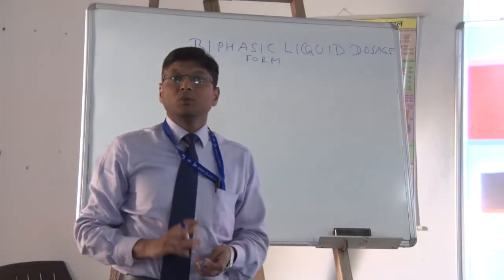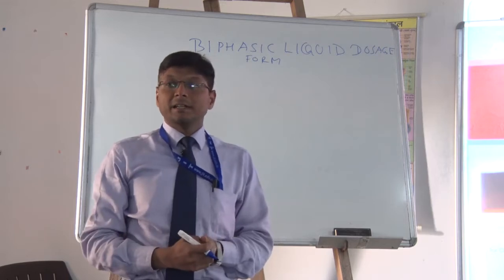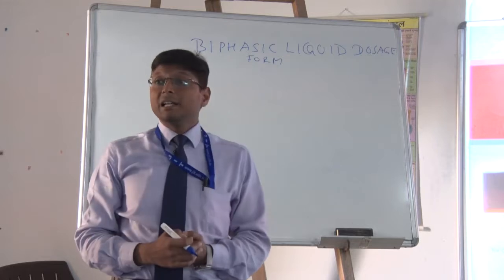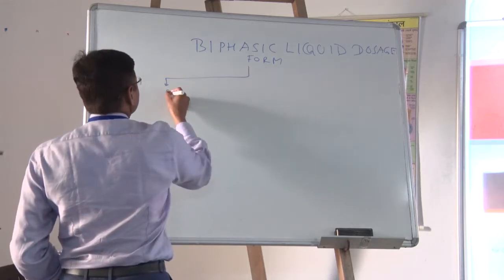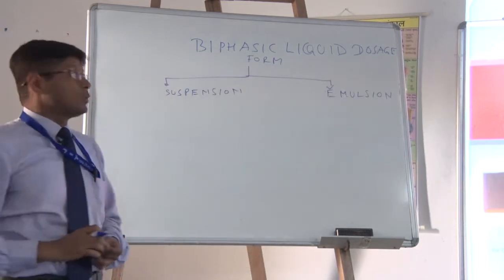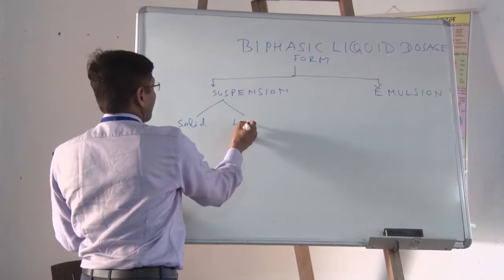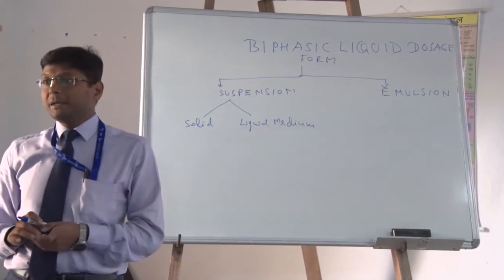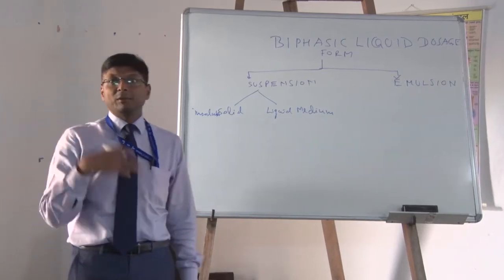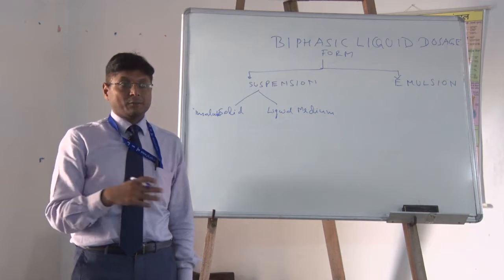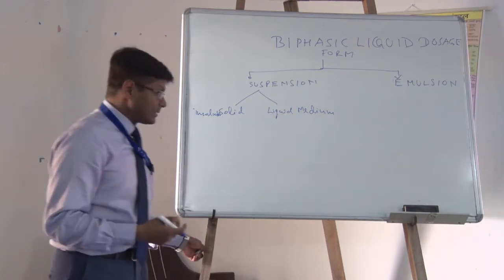As per their name, biphasic liquid dosage forms have two phases, as we already discussed in the first lecture. There are two types of biphasic liquid dosage forms: suspension and emulsion. Suspension contains solid in a liquid medium — insoluble solids — because if the solid were soluble, we would go for a solution. But when it is insoluble, we go for suspension or emulsion.